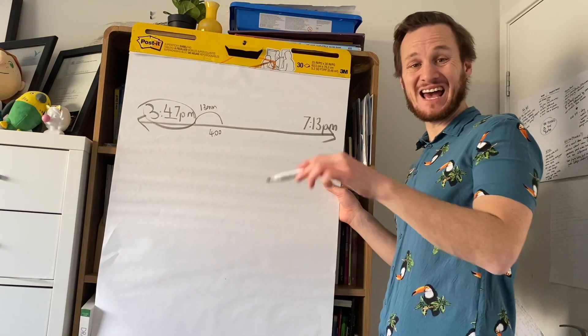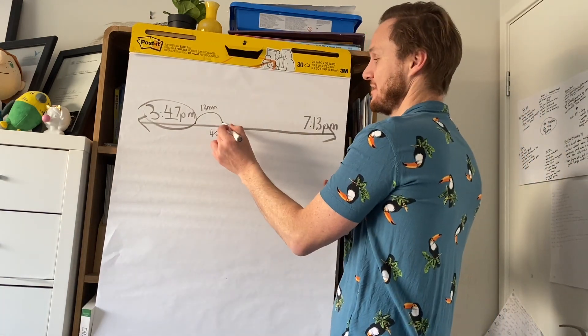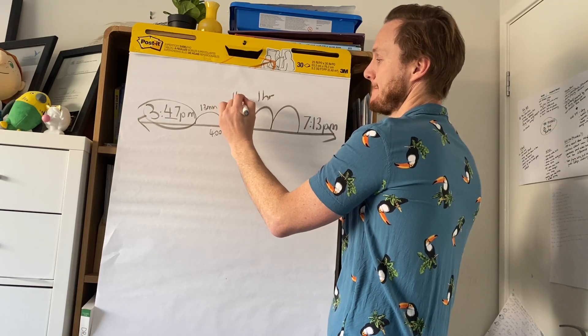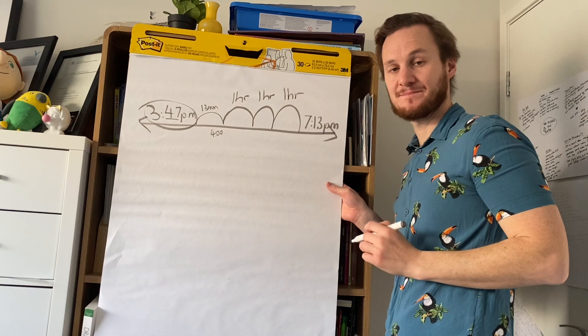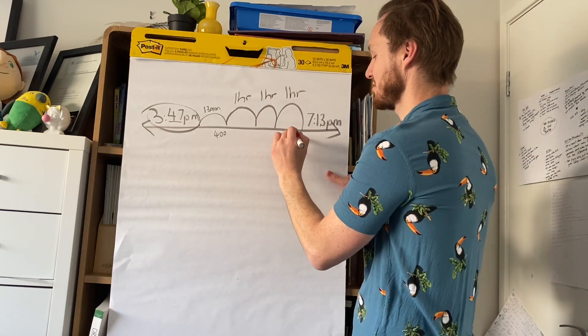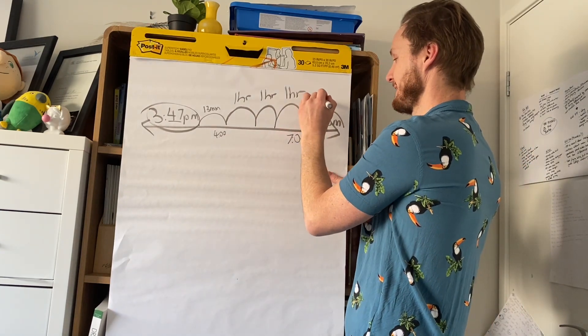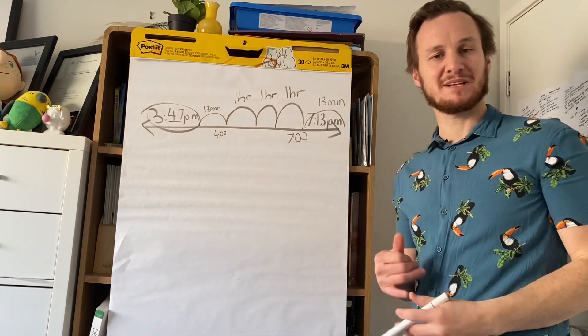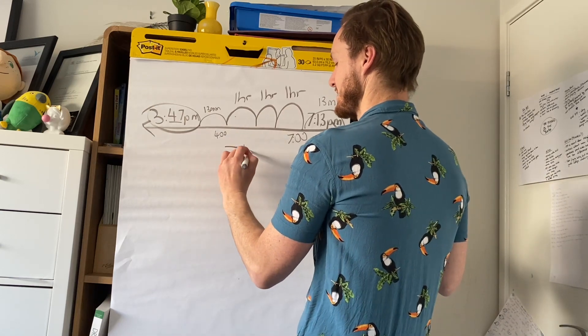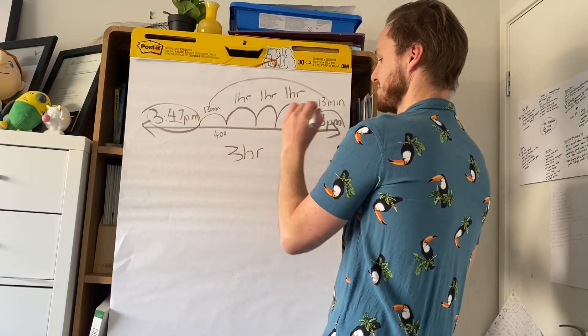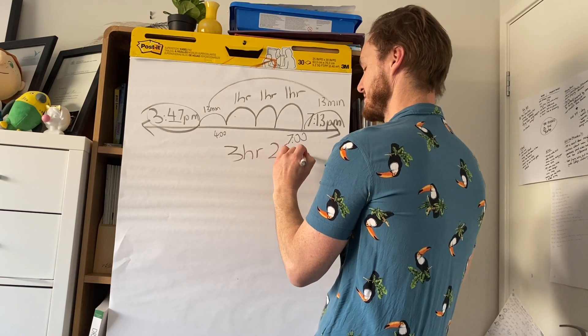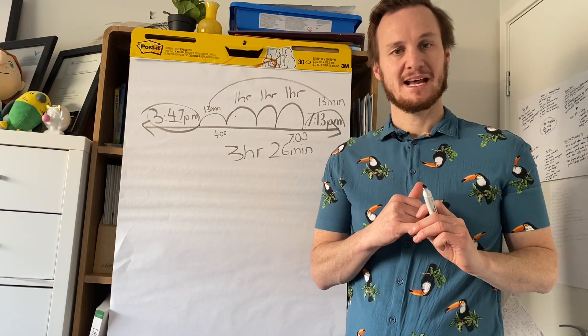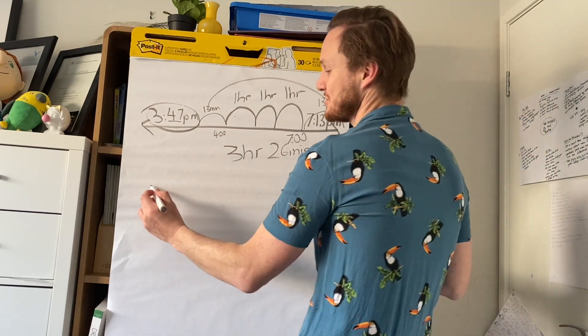Now that I'm at 4, I can jump forward hours at a time. So to get to here, I go 5 o'clock, 6 o'clock, 7 o'clock, and I'm jumping forward an hour at a time. Now I'm at 7 o'clock. I know my last jump is just 13 minutes. And now I can just plus up my jumps. So I've got 1, 2, 3 - 3 hours, 13 plus 13 - 3 hours, 26 minutes. Three hours and 26 minutes is how long it took me.